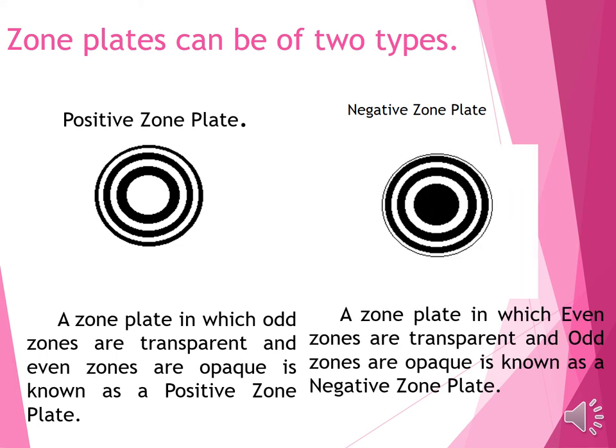There are two kinds of zone plates. Number one, positive zone plate. Number two, negative zone plate. A zone plate in which odd zones are transparent and even zones are opaque is known as a positive zone plate. The negative zone plate is that zone plate in which even zones are transparent and odd zones are opaque.